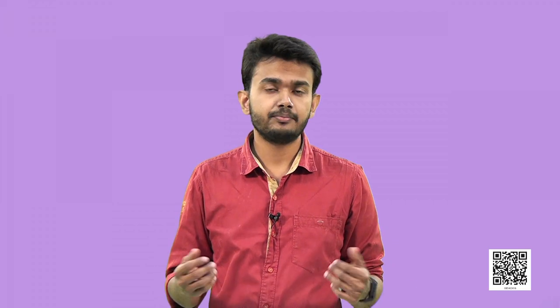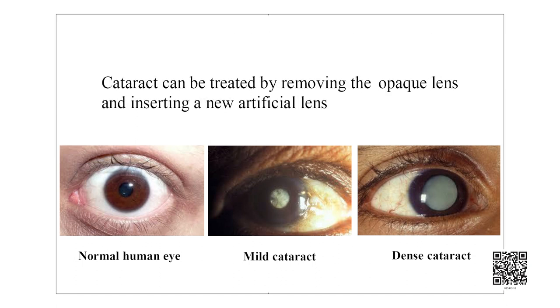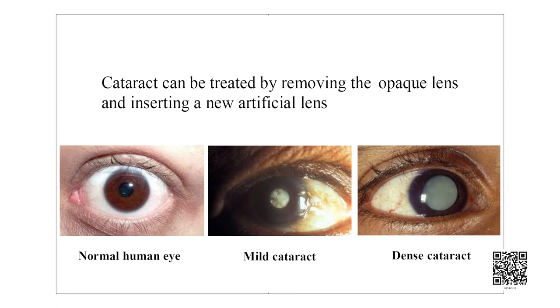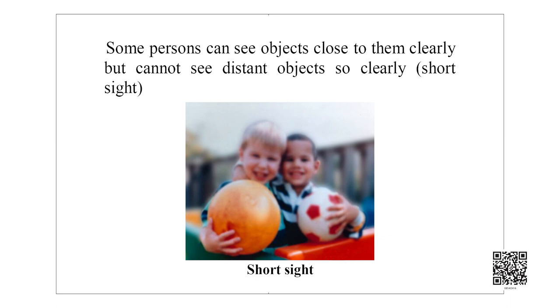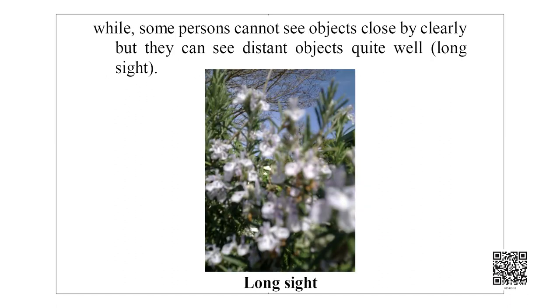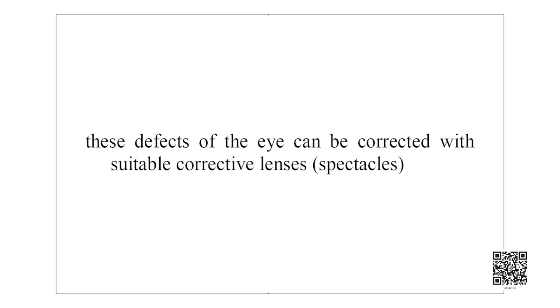Due to some reasons, our eyes can develop certain defects or problems. Sometimes, particularly in old age, when the eye lens becomes cloudy, the eyesight becomes foggy and causes loss of vision — this is called cataract. Cataract can be treated by removing the opaque lens and inserting a new artificial lens. Some people can see objects close to them clearly but not distant objects — this is called short sight. Others cannot see objects close by clearly but can see distant objects well — this is called long sight. Both can be corrected with suitable corrective lenses.